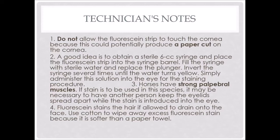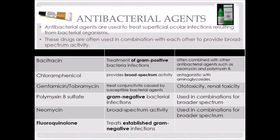Some antibacterial agents commonly used in the eye — remember, it must be labeled for ophthalmic use. If it's not labeled for ophthalmic use, it's not going to have the right pH to be safe in the eye. A lot of these are used to treat superficial ocular infections and are usually used together to get broad-spectrum activity. Bacitracin is usually mixed with polymyxin B sulfate and neomycin to make a triple antibiotic ophthalmic solution, but you can get them separately as well. This treats gram-positive infections, and neomycin has broad-spectrum activity.